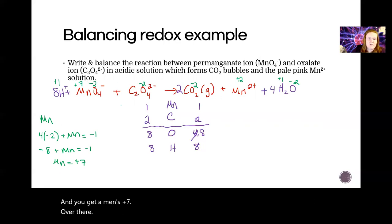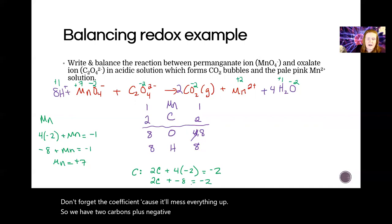Here, this carbon, same kind of deal there. So we're going to say two carbon this time plus four oxygen equals the charge. Don't forget the coefficient because it'll mess everything up. So we have two carbons plus negative eight equals negative two. So add eight to both sides, which means we get to six. So each carbon is worth three.